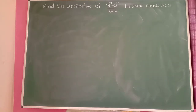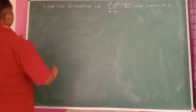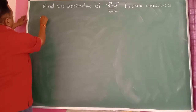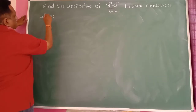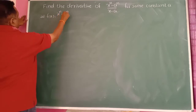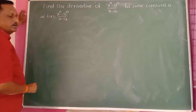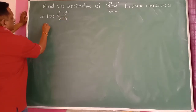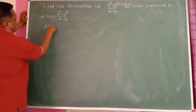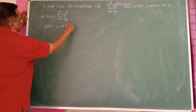Find the derivative of x raised to n minus a raised to n, divided by x minus a, for some constant a. Let us consider the given function f(x) equal to x raised to n minus a raised to n divided by x minus a. We use the quotient formula, differentiating with respect to x in both the numerator and denominator.